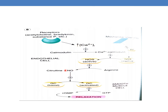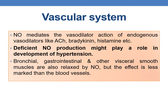Nitric oxide is produced from L-Arginine, diffuses to endothelial smooth muscle cells, and increases cyclic GMP levels by activating guanylyl cyclase, leading to smooth muscle relaxation. NO mediates vasodilator actions of endogenous vasodilators like acetylcholine, bradykinin, and histamine. Deficient nitric oxide production may play a key role in hypertension. Bronchial, gastrointestinal, and other visceral smooth muscles are also relaxed by NO, though the effect is less marked than on blood vessels.